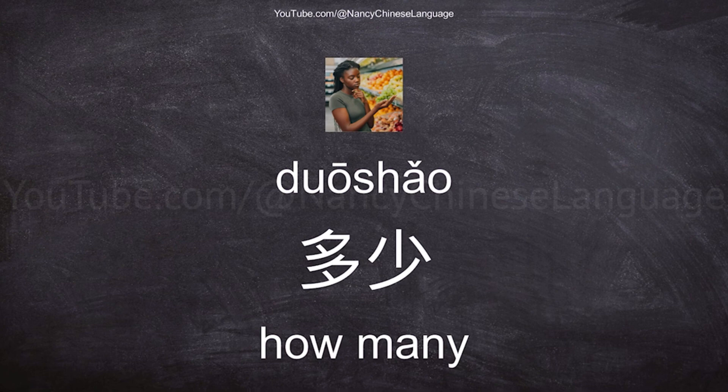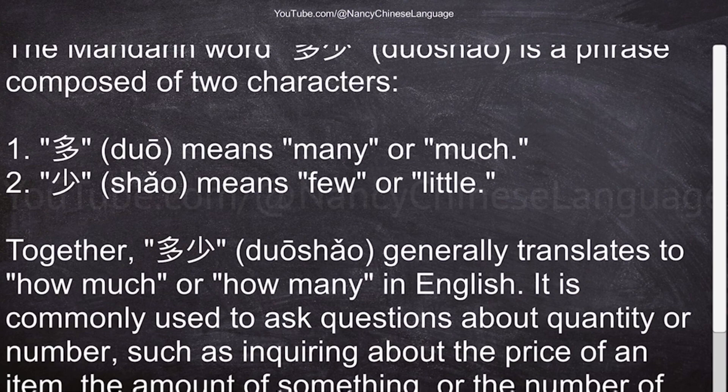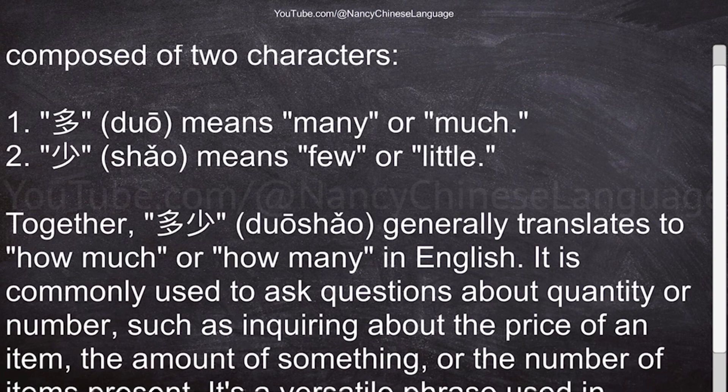The Mandarin word 多少 is a phrase composed of two characters. 多 means many or much, and 少 means few or little.